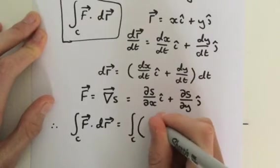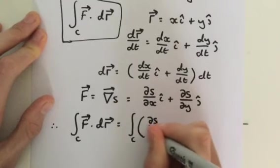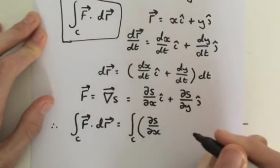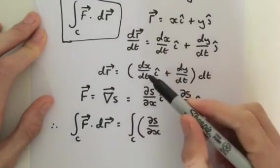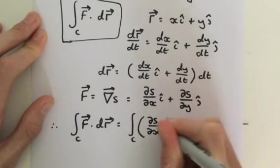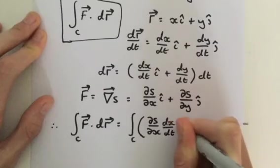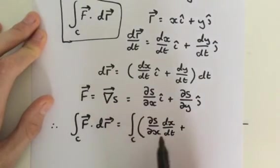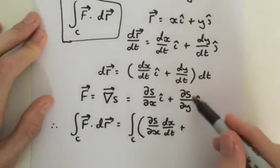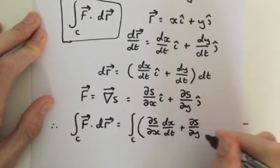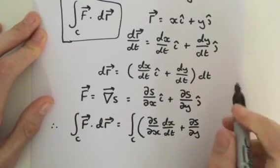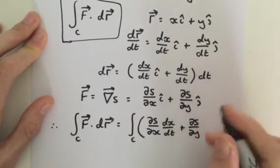The x component of F is dS by dx. Now, we multiply that by the x component of dr, which is dx by dt. And then we add, because it's the dot product, the y component of F, which is dS by dy. And then we multiply the y component of our dr, which is dy by dt.